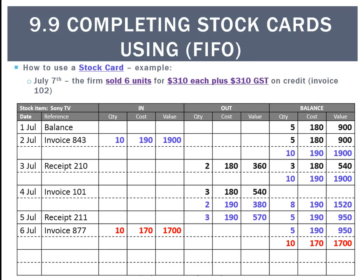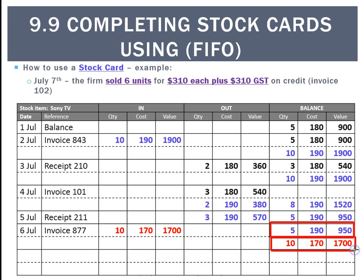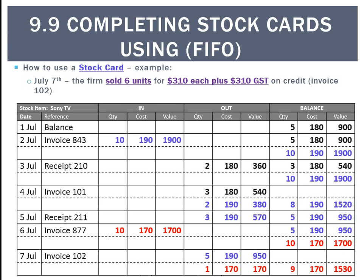Lastly, we've sold 6 more units. Our FIFO assumption means the first 5 must come from the $190 pile, and once they're gone, we take 1 from the $170 pile. That goes in the out column as stock leaving the business, leaving a balance of 9 units at $170 for $1,530.